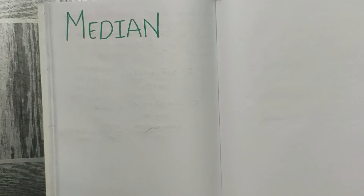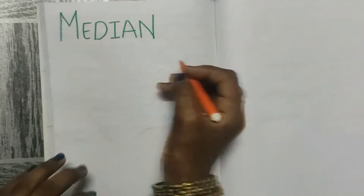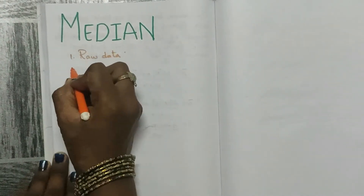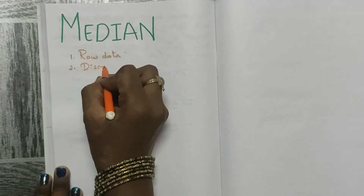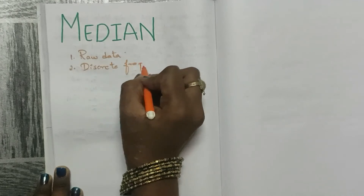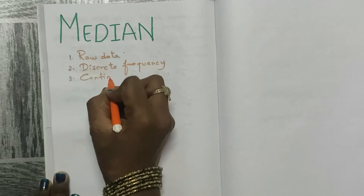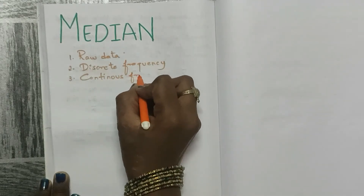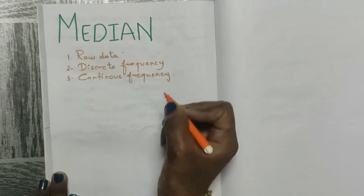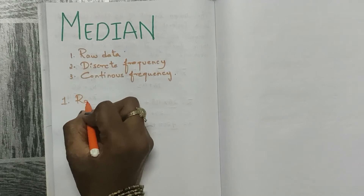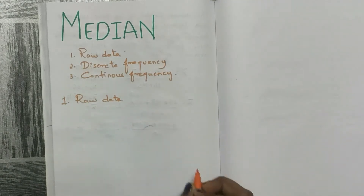Hello guys, in this video we'll be learning about median. Median is the middle value in an array. It includes raw data, discrete frequency, and continuous frequency, so we will discuss one by one.